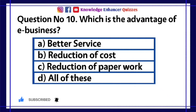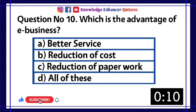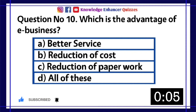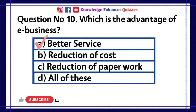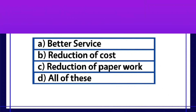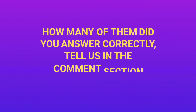Question number 10: Which is the advantage of e-business? A. Better service, B. Reduction of cost, C. Reduction of paperwork, D. All of these. Option D is the right answer. How many of them did you answer correctly? Tell us in the comment section below.